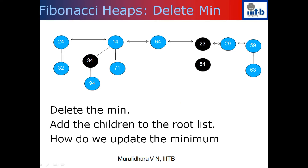Now we have a Fibonacci heap, but the only problem is that I need the pointer to the minimum. I do not have the pointer to the minimum. So after I delete the minimum, I need to traverse through this list and keep track of the minimum. Till now I was very lazy and not doing much, but now I do not know where the minimum is. The minimum can be any number in the root list, so I am forced to go through the entire list to find the minimum.